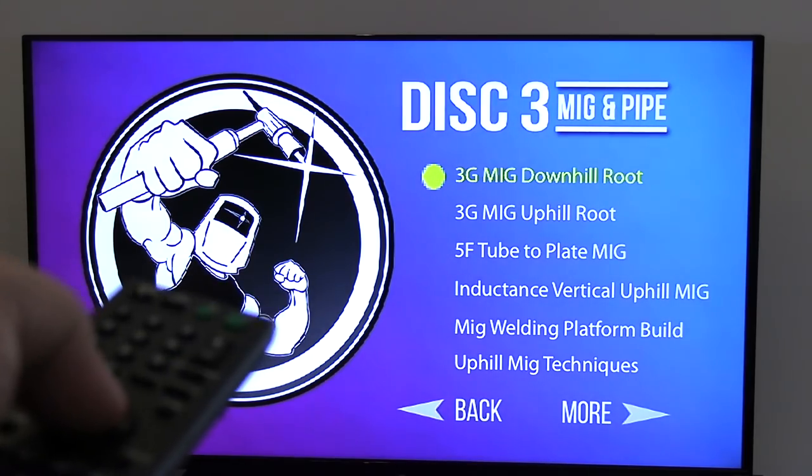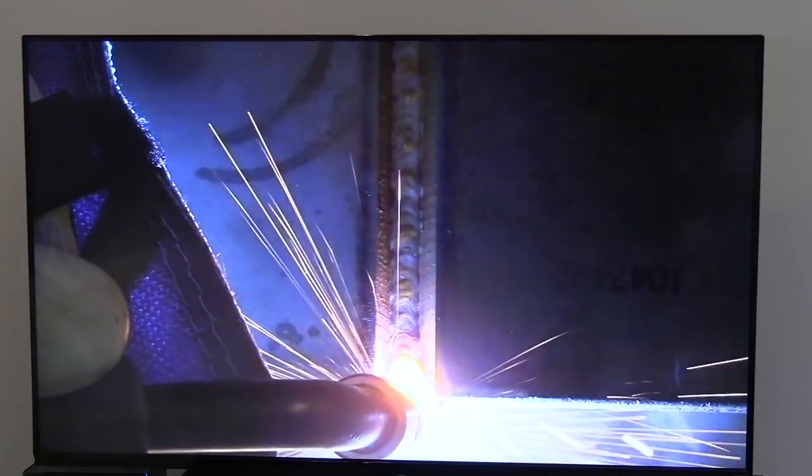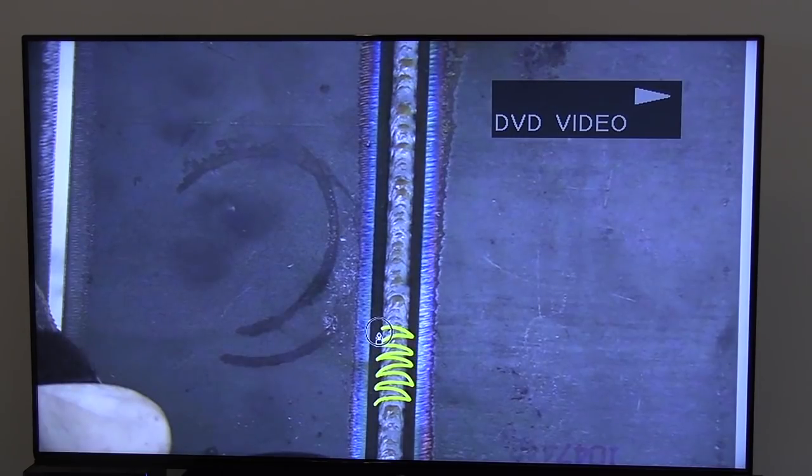Disc three is MIG and pipe. This disc alone is worth several times the cost of this DVD. This disc has a lot of open root stuff on it, including 6010 and this MIG joint here. Some of the best arc shots and instruction that I've ever been able to put on video is on this disc.